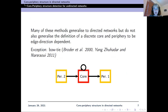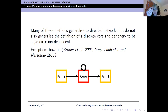Many of these methods can extend to directed networks, but the catch is that the definition of core and periphery is usually not extended to directed networks. The exception is the Bowtie structure, introduced by Broder et al. and examined in a big paper by Young et al. in 2011. In Bowtie, we have a densely connected core, one periphery feeding into the core, and another periphery fed by the core—with the possibility of multiple peripheries.